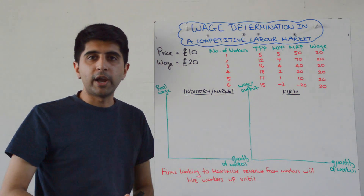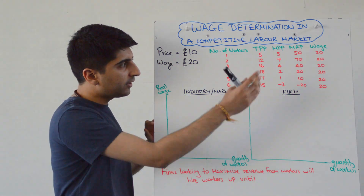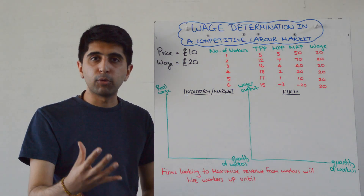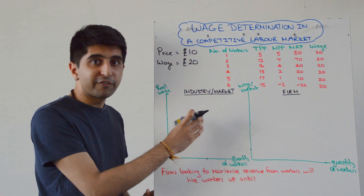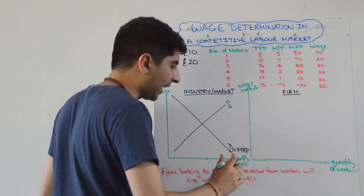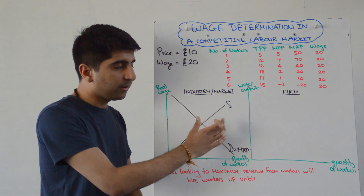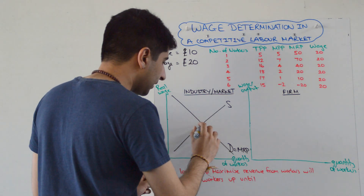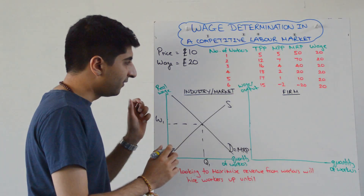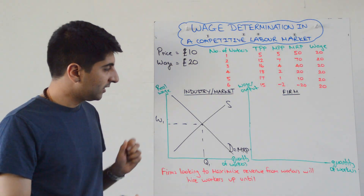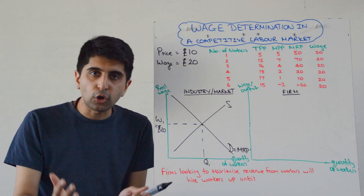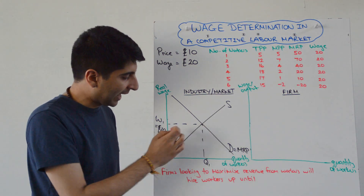The wage for each worker is £20 per hour, set by the market. Let's now understand diagrammatically where wages come from in a competitive labour market. There is a supply of labour and a demand for labour in the industry. Where the two meet, we get an equilibrium quantity of workers and, more importantly, the equilibrium wage rate W1. If this is the market for all burger joint workers, we know that is £20 — coming from where demand equals supply in the total market.